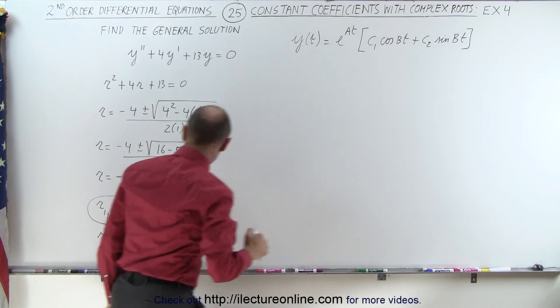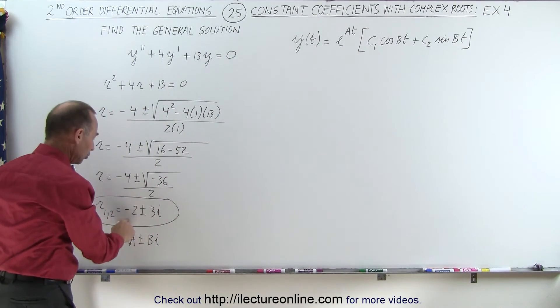Then we simply plug in what these are equal to: a is negative 2, b is 3.